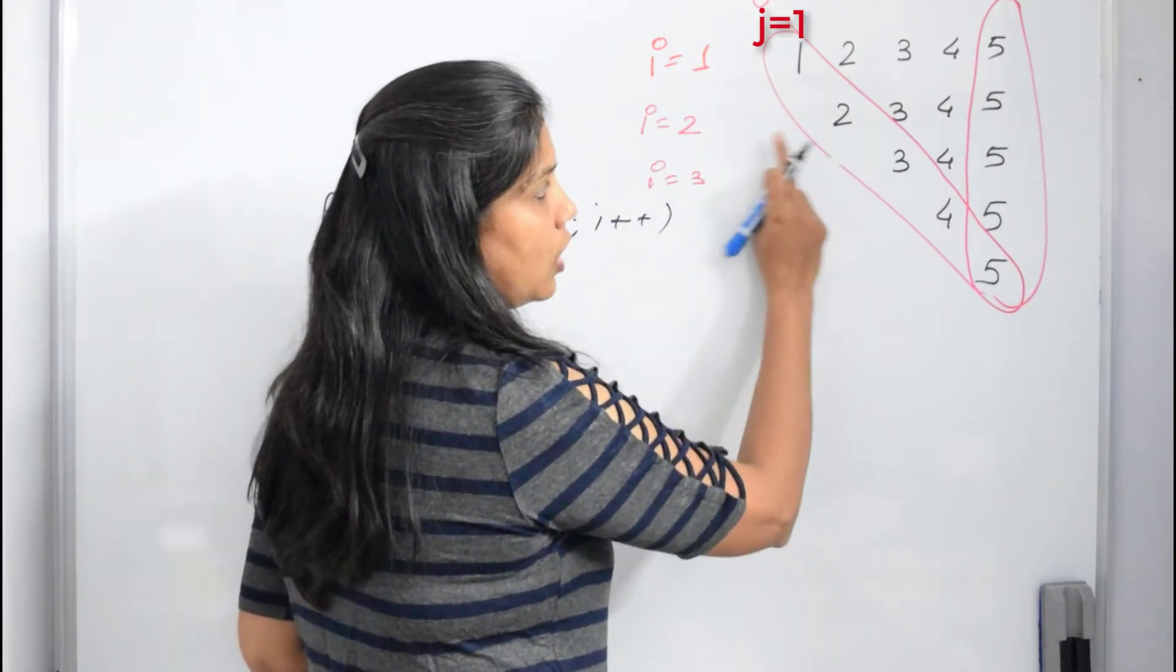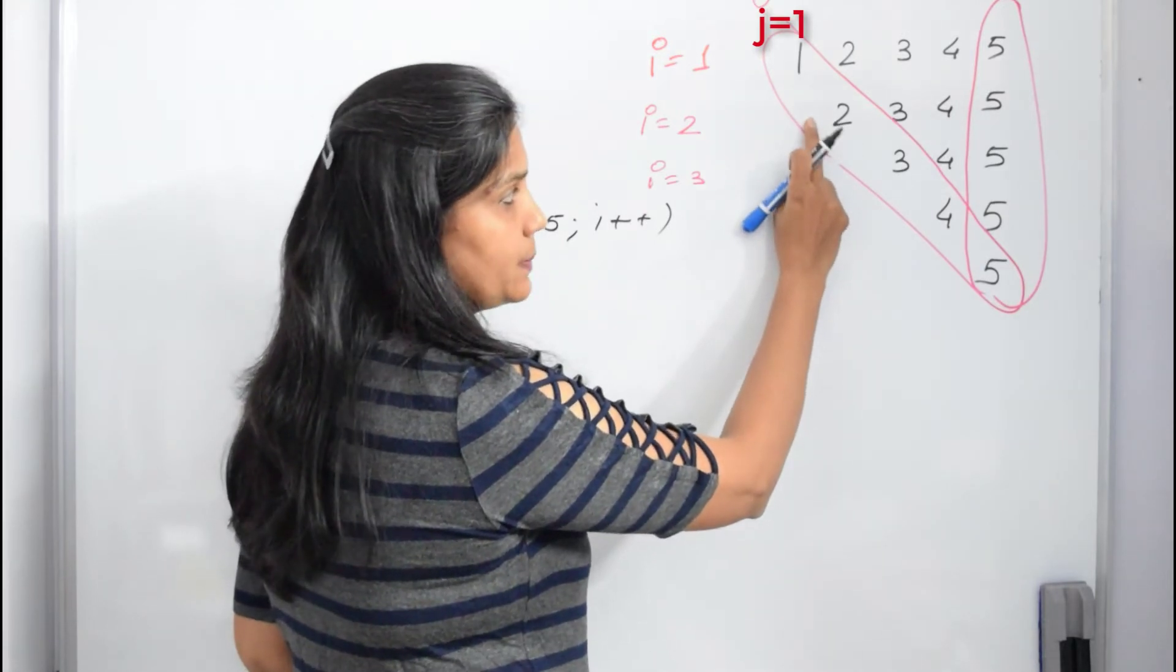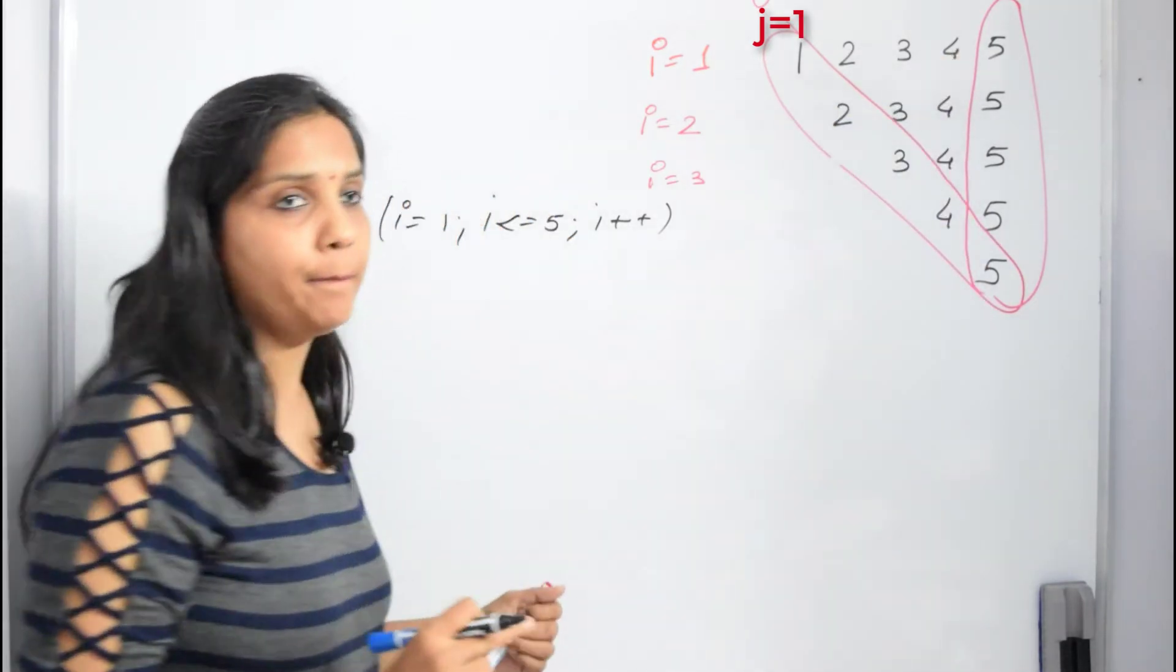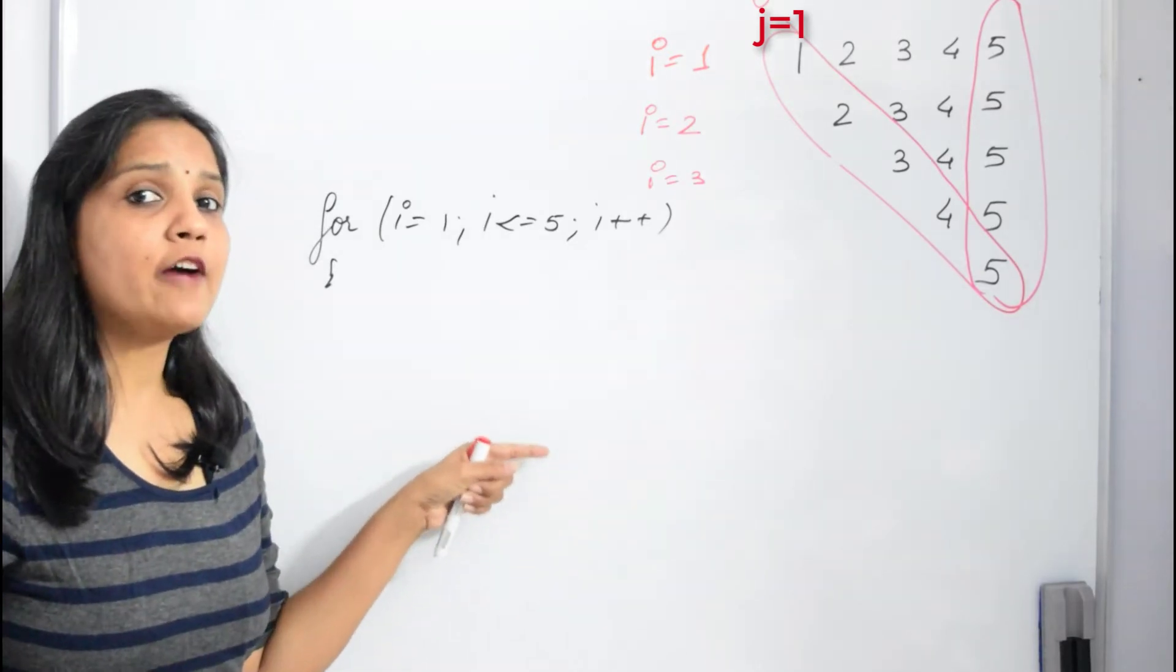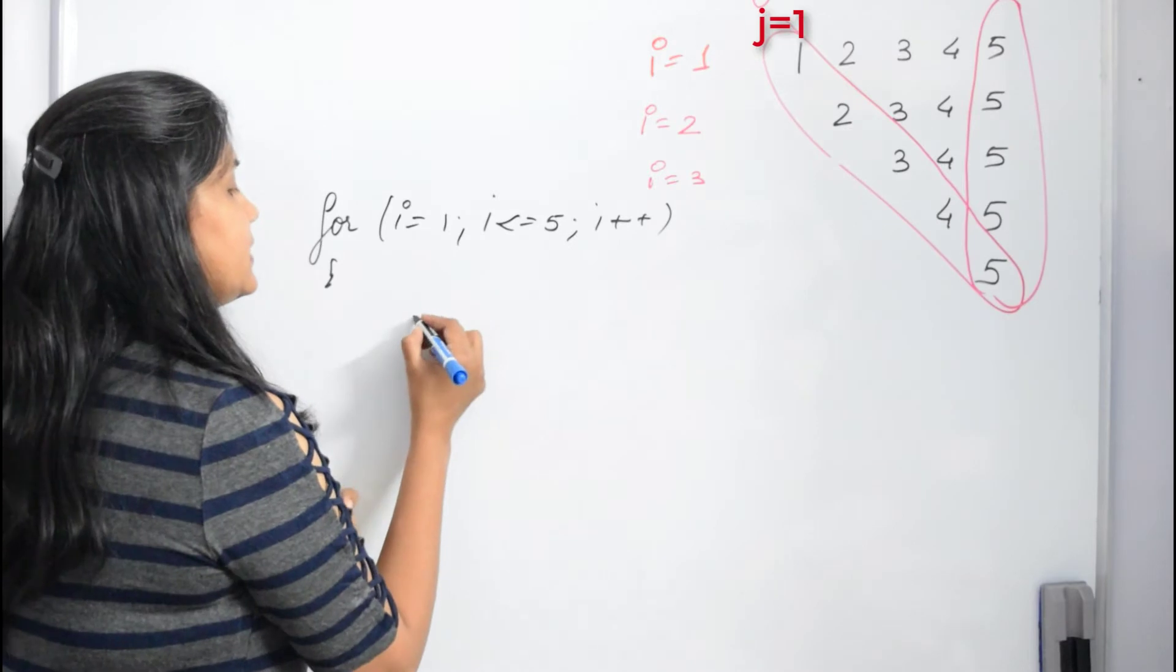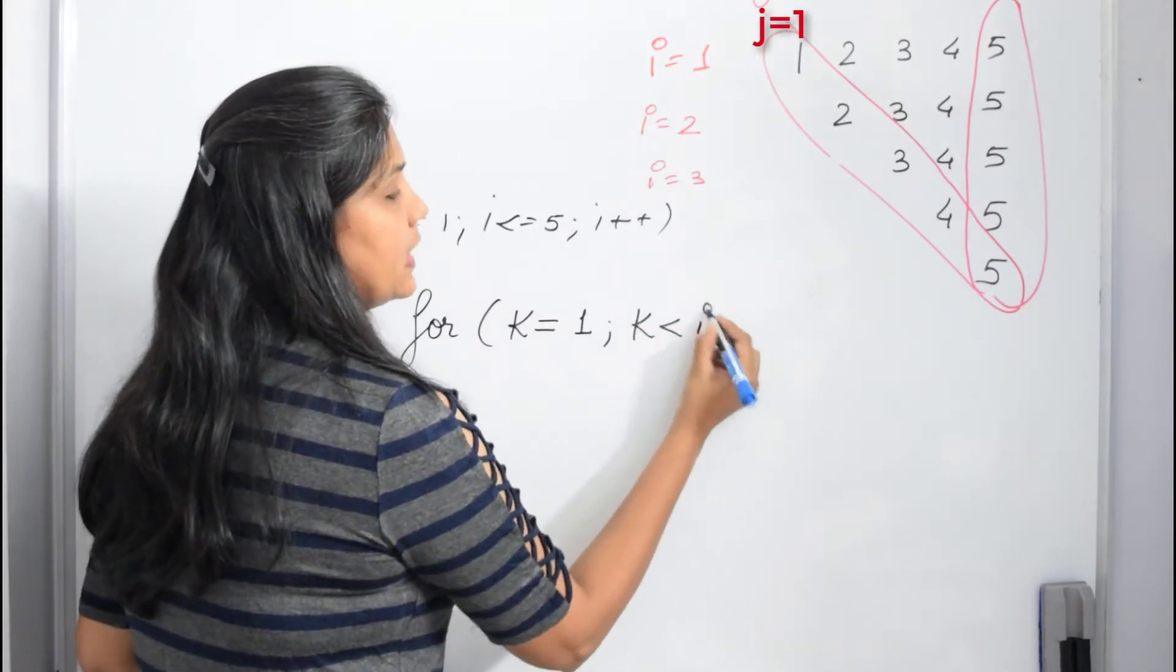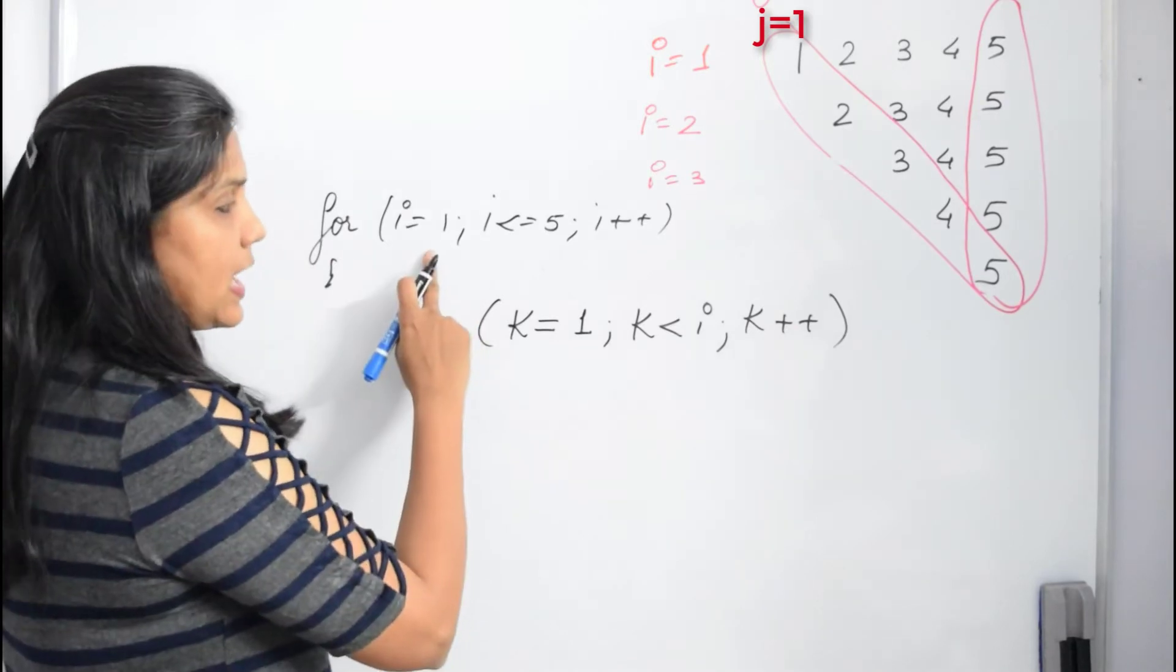Now the important point to notice: whenever you are printing every column, here there are 0 spaces, then you can see there is 1 space, 2 spaces, then there are 3 spaces and then there are 4 spaces before you actually print the values. So before you print the values we have to write a loop for spaces. I can say for k equals 1, k less than i, and k plus plus.